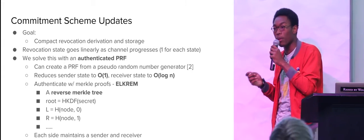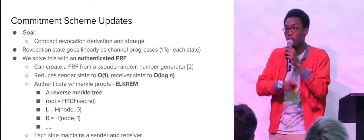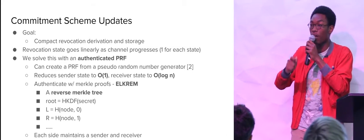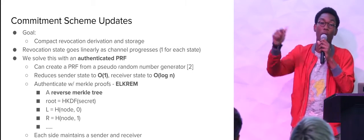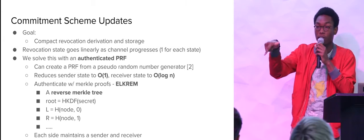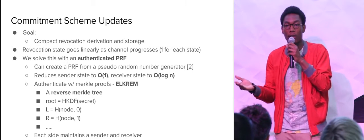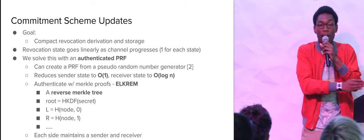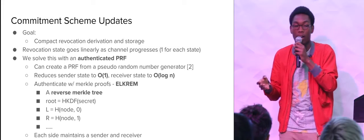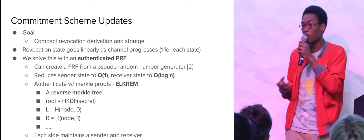One thing I mentioned before is the revocation scheme. For every single state you move forward, you need to provide a revocation of that prior state — if you ever go back to state one while we're on state two, I can take all your money. But as you can see, this grows linearly. If we're doing a billion updates, I have basically a billion values, and that requires a lot of storage.